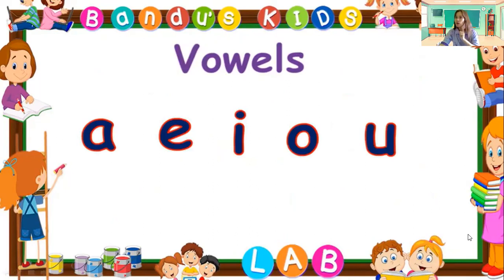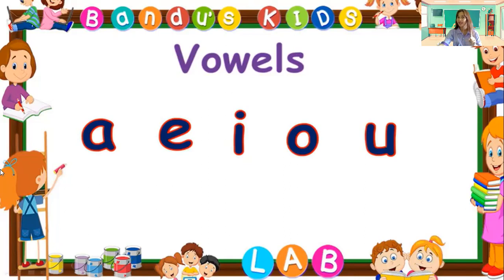What are the sounds of the vowels? Let us find out. Vowel A sound is A. Vowel E sound is E. One more — vowel E sound, E. Letter I sound is different. Letter E sound is E; letter I sound is different, student. It's not the same.